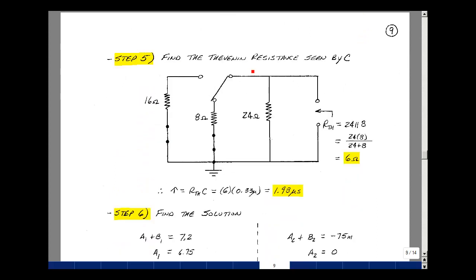Step five is to find the Thevenin resistance seen by the terminal of the capacitance with all the independent sources set equal to zero. So I had a voltage source here and a voltage source here, but because the switch is in this position, this has no effect. Looking back from the terminals of the capacitor, I see 24 ohms in parallel with 8 ohms. They share the same two nodes, so they're in parallel. It'll be a product over the sum, and that turns out to be 6 ohms. My time constant is r7 times c, and that's 6 ohms times 0.33 microfarads, which is 1.98 microseconds.